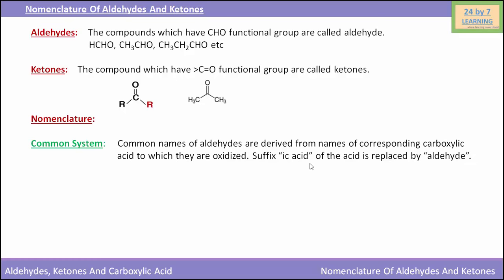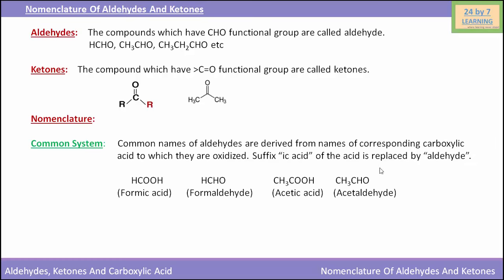The suffix 'ic' and 'acid' of the acid is replaced by the word 'aldehyde'. For example, HCOOH i.e. formic acid, when converted to its aldehyde HCHO, is called formaldehyde — you can see the suffix 'ic acid' of formic acid is replaced by 'aldehyde'. Similarly, when acetic acid CH3COOH is converted to its aldehyde CH3CHO, it is called acetaldehyde, and again the suffix 'ic acid' is replaced by 'aldehyde'.